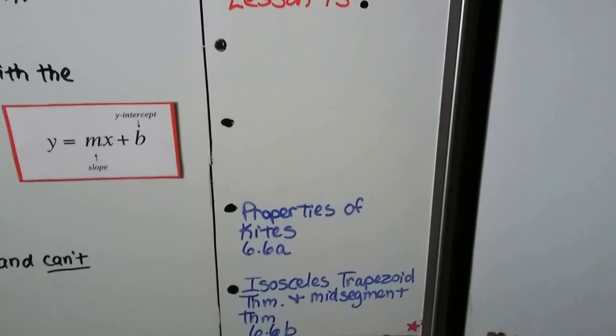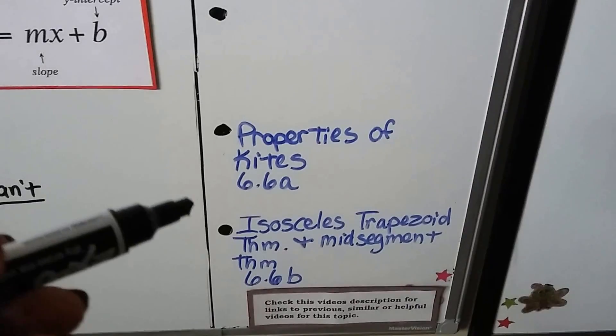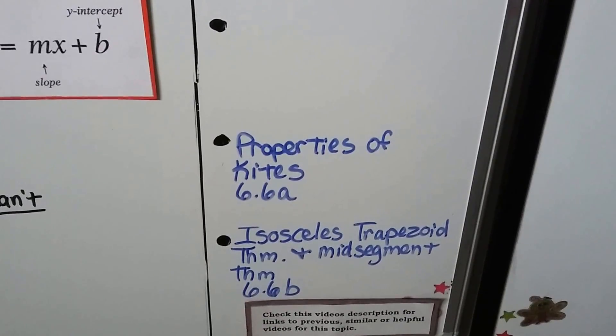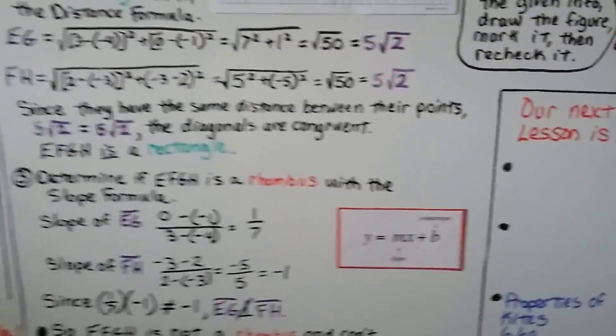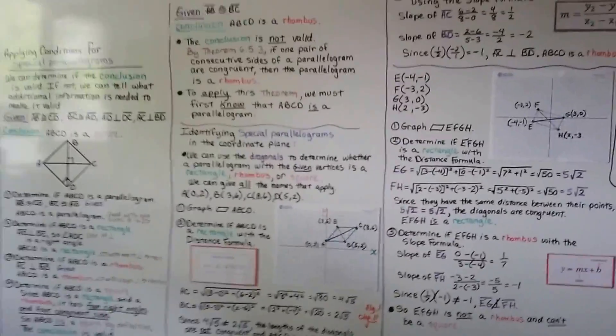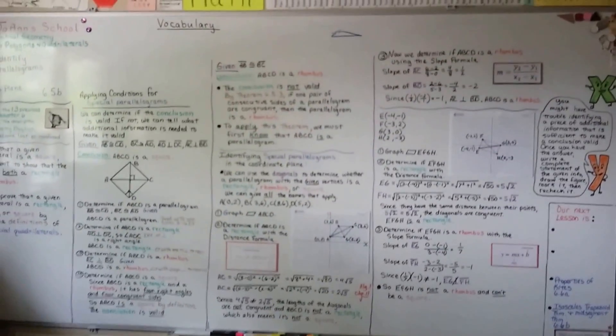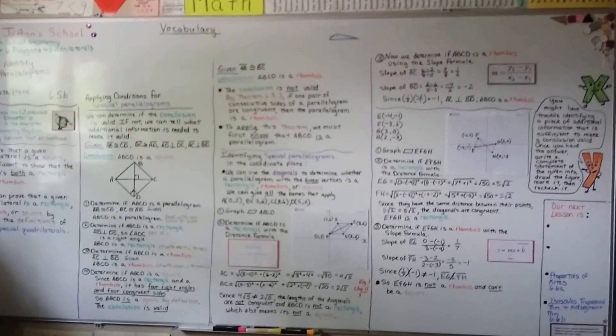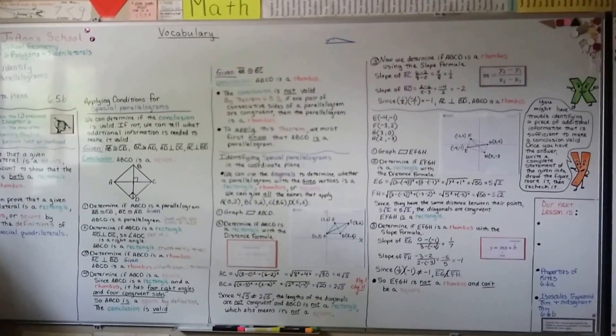Our next lesson is about the properties of kites, which the second half of that lesson is going to be about isosceles trapezoids. So if any of this was too confusing, try watching the video again, because it's like when you watch a movie a second time, you find little Easter eggs or something that you missed the first time. I'm really proud of you. Keep trying, and I'll see you next time. Bye.